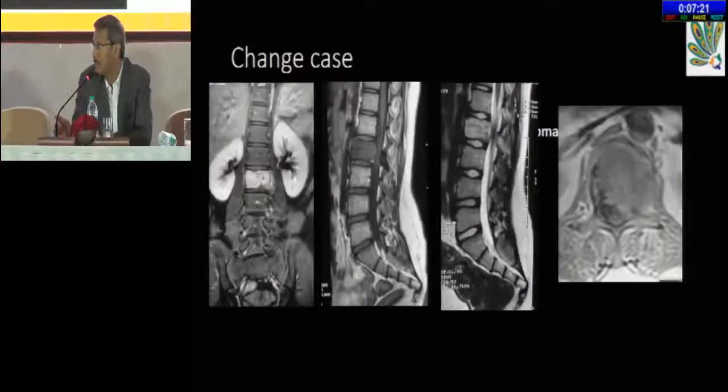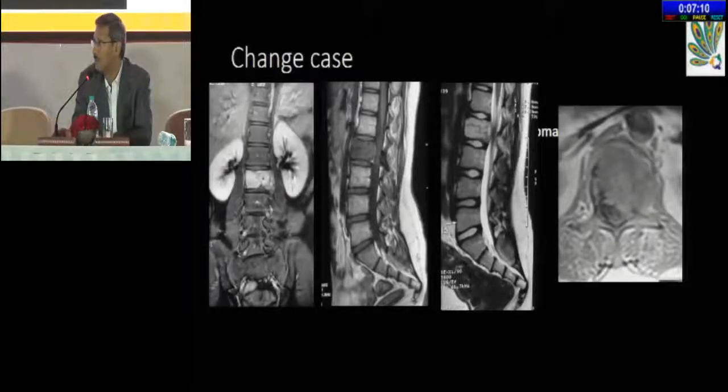Dr. Lashkar raised an important point: when deciding about radiation therapy, what is causing the cord compression must be determined — is it soft tissue or is it a bone fragment? If it is a bone fragment, it will never go back to its original position after radiation, although pain relief will be achieved. You need to be sure about bone fragment versus soft tissue causing the cord compression; otherwise, radiation is the way to go.